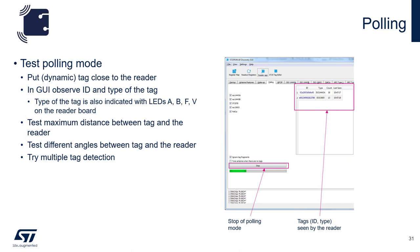To test the polling mode, simply put a tag in the field. In the GUI, you'll see the unique ID, the type of tag, the number of times the tag has been read, and the last time the tag was read. On the discovery boards, you'll see the LEDs light up of the type of tag that you're reading. From here, you can measure the maximum distance between tag and reader, different angles between the tag and reader, and you can also try multiple tag detection.